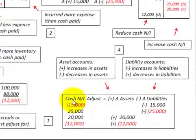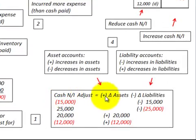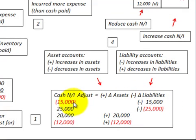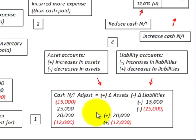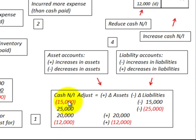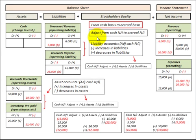Looking at our equation: cash net income adjustment equals changes in assets minus changes in liabilities. Where we had an increase in a liability we subtract that; a decrease in a liability ends up as a plus amount. For asset accounts, an increase we add, and a decrease we also add as a negative amount. That gives us our cash net income adjustment.